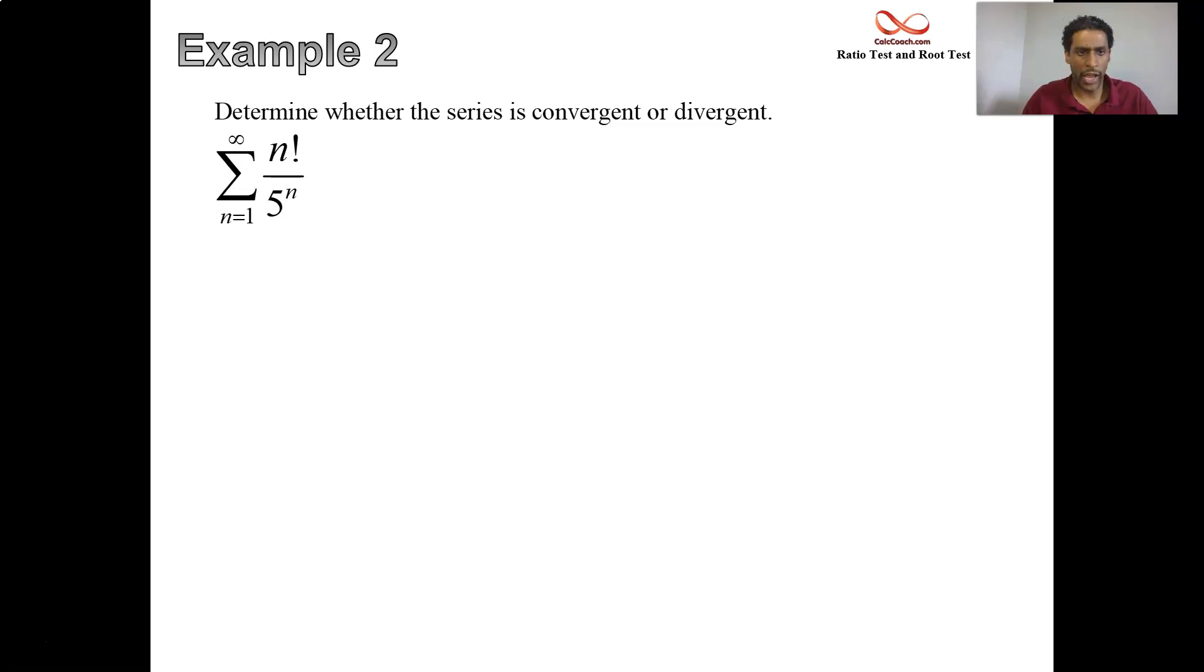In the ratio test our job is to do the limit of the ratio of successive terms, a sub n plus one divided by a sub n. The next term divided by the current term, absolute value, and find out what happens as n goes to infinity.